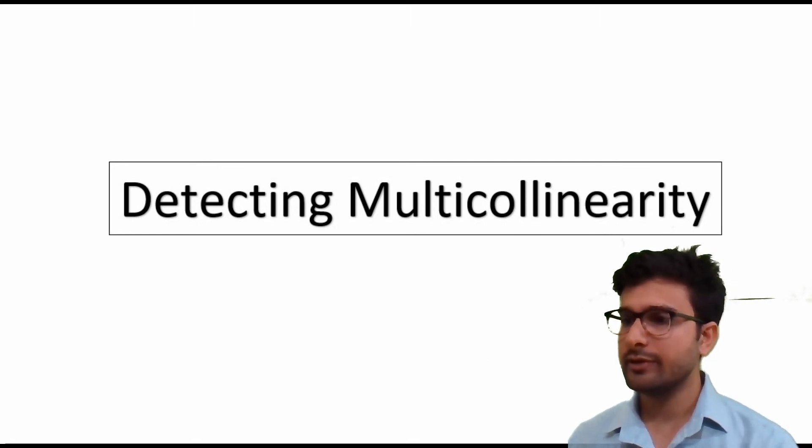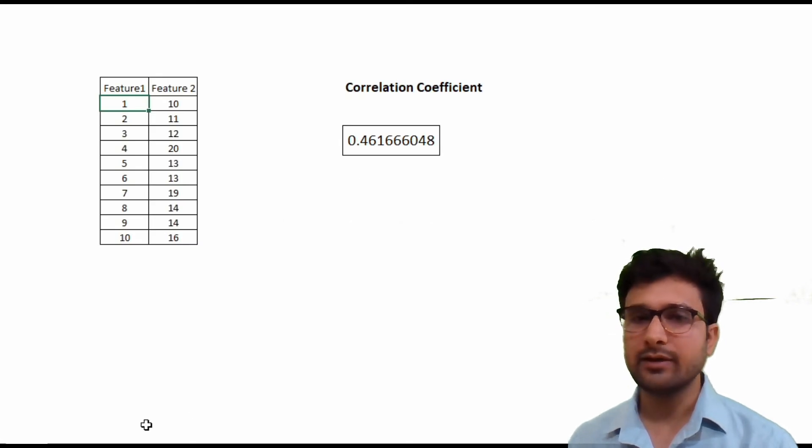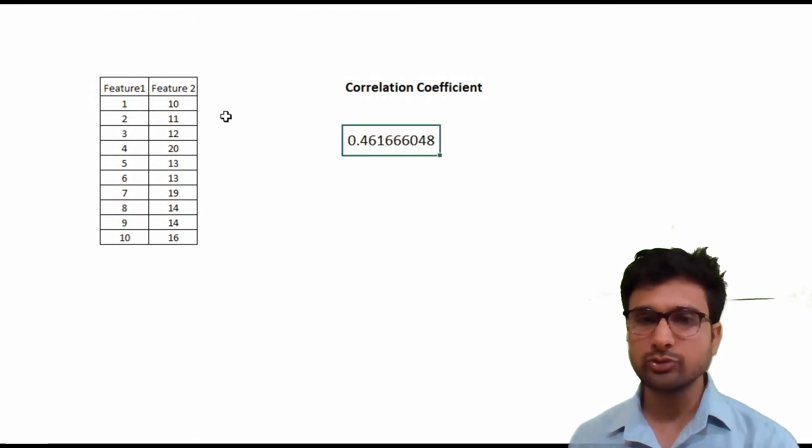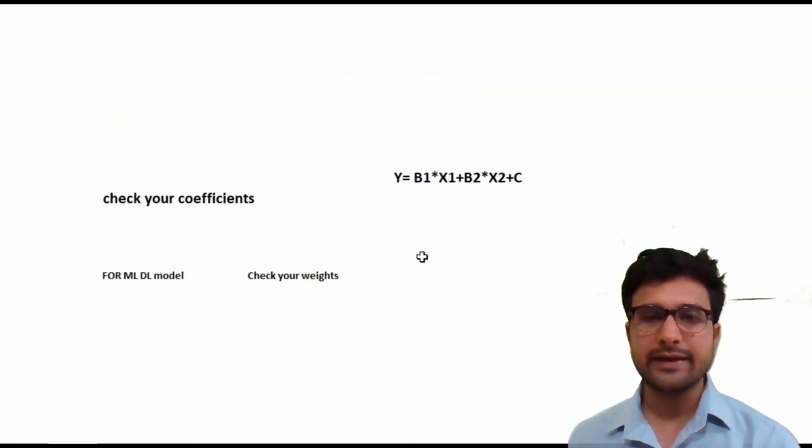As you understood what multicollinearity is, let's understand how to detect it in features. Here we have data on the screen with feature 1 and feature 2. The first way to detect multicollinearity is to find out the correlation coefficient between these two features. If the correlation coefficient is quite high or even greater than 0.7 to 1, you cannot use those features directly in your model.